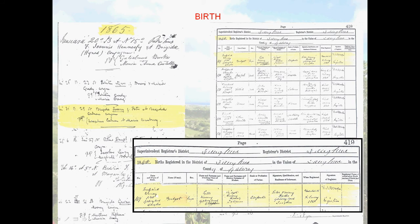Birth records can be found. This is my great-grandmother Bridget Delia Sweeney, born in 1865. On the left is her baptism record from the church, showing she was born on the 29th and baptized on the 31st. It shows her parents, her mother's maiden name, and her godparents. Most of the time, godparents were siblings or cousins of the parents — possibly even the grandparents. So pay attention to godparents listed in these records.